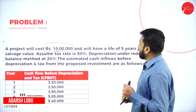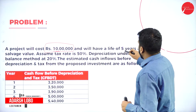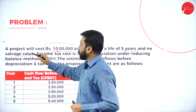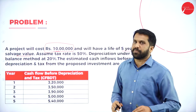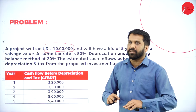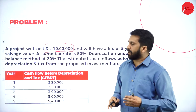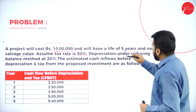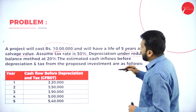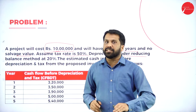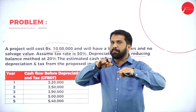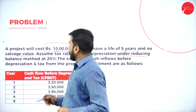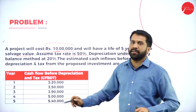Your problem: a project will cost you 10 lakh. What is the cost of the project? 10 lakh. It will have a life of five years and no salvage value — no salvage means at the end there is nothing to be deducted. Now assume tax rate is 50 percent, depreciation under reducing balance method.